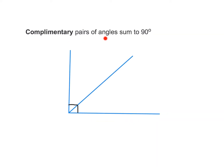We're now going to look at complementary pairs of angles, and they must sum to 90 degrees. In my diagram, that little box placed in the corner represents that this angle is 90 degrees. So we can say that angle A and angle B must equal 90 degrees, and therefore these two angles must be complementary and add up to 90 degrees. We could also write that as A plus B equals 90 degrees.